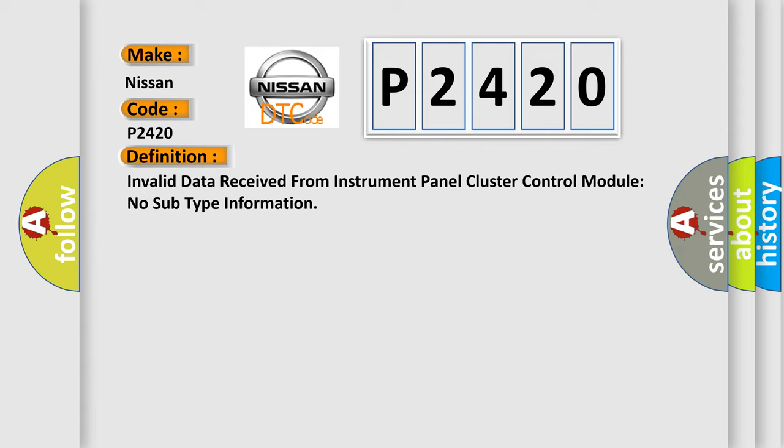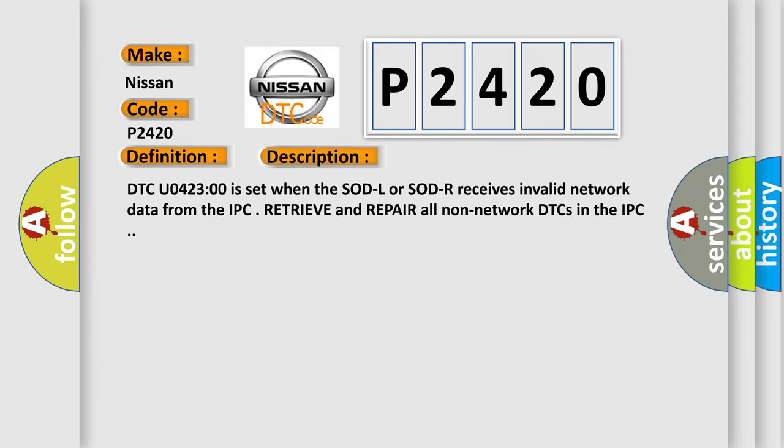And now this is a short description of this DTC code. DTC U042300 is set when the SOD-L or SOD-R receives invalid network data from the IPC. Retrieve and repair all non-network DTCs in the IPC.